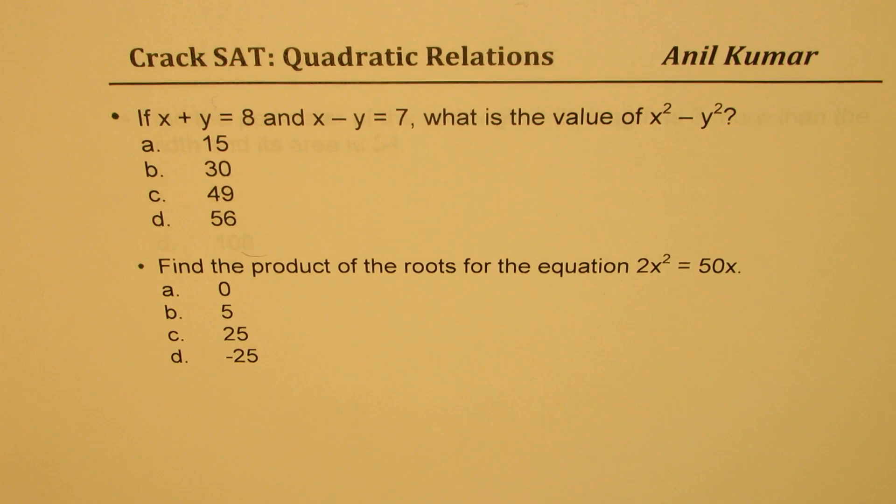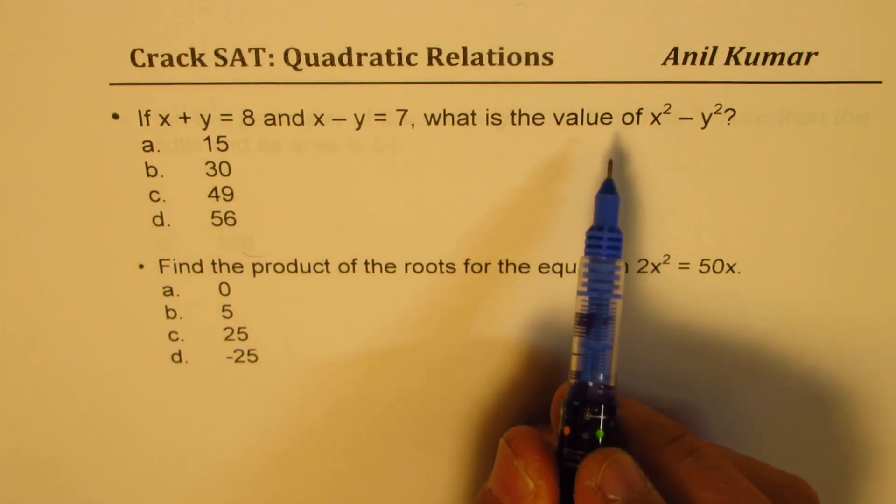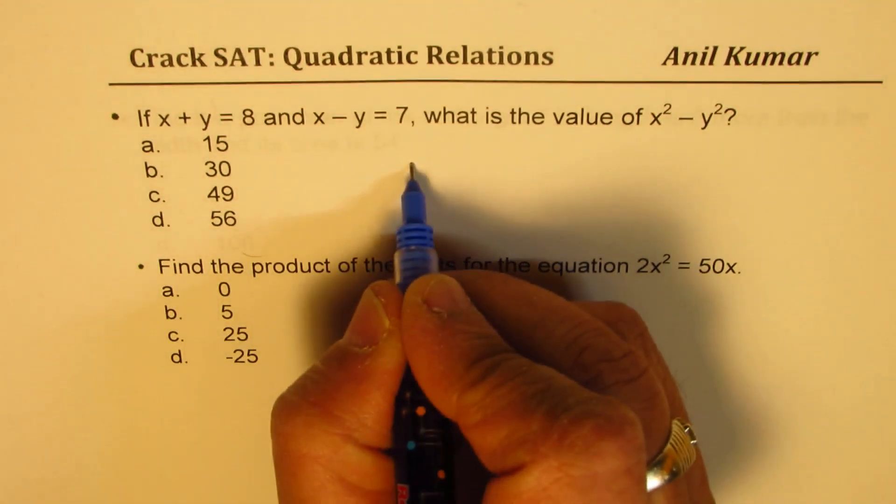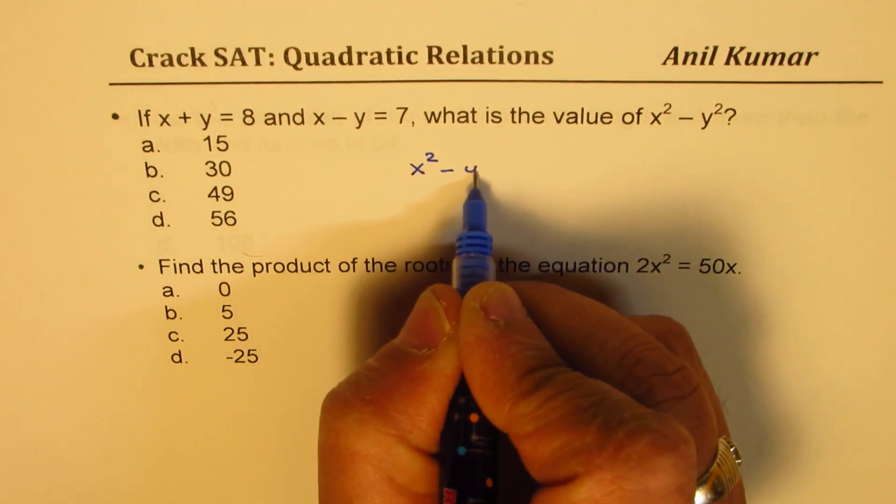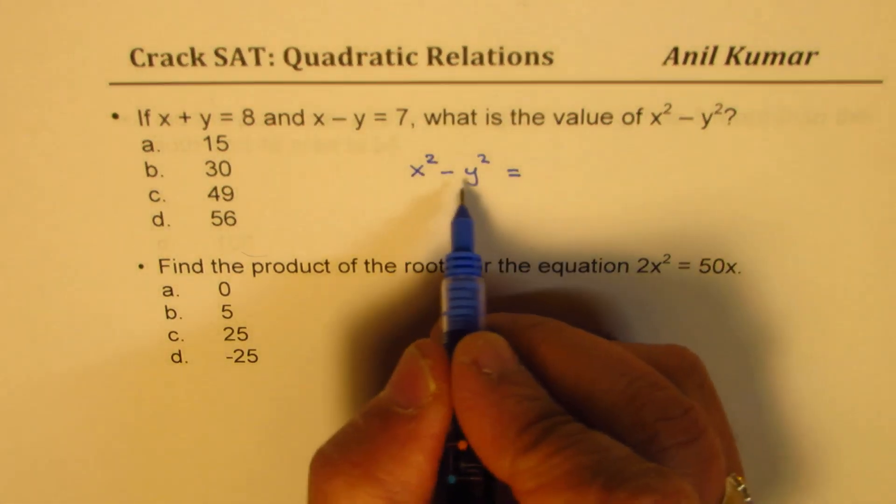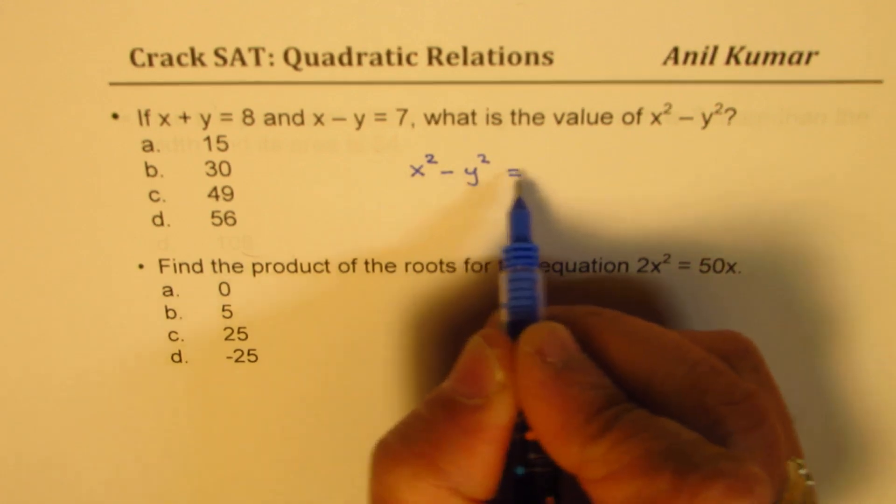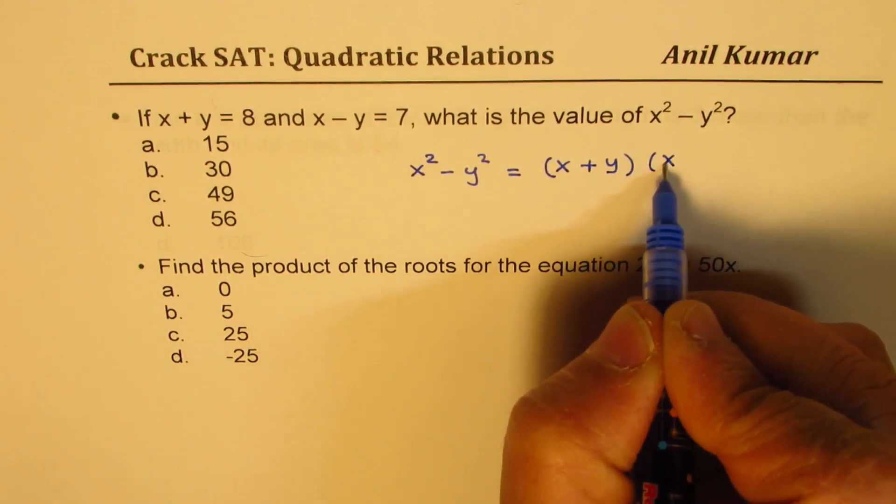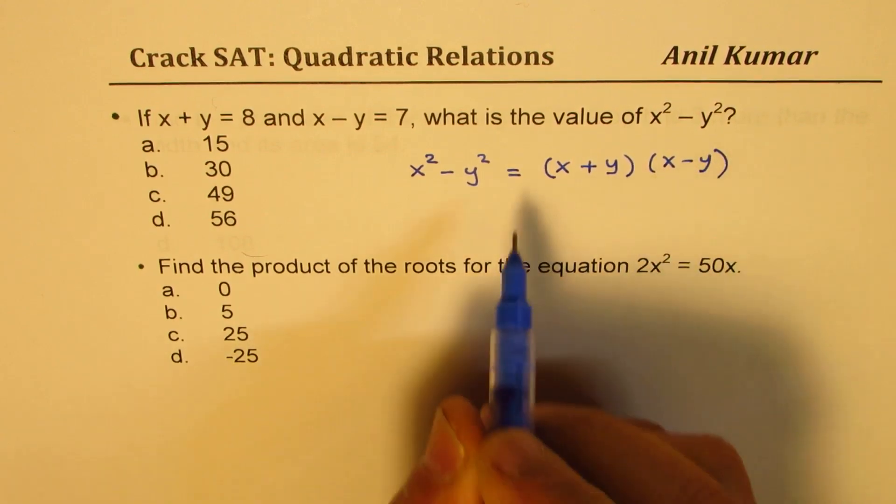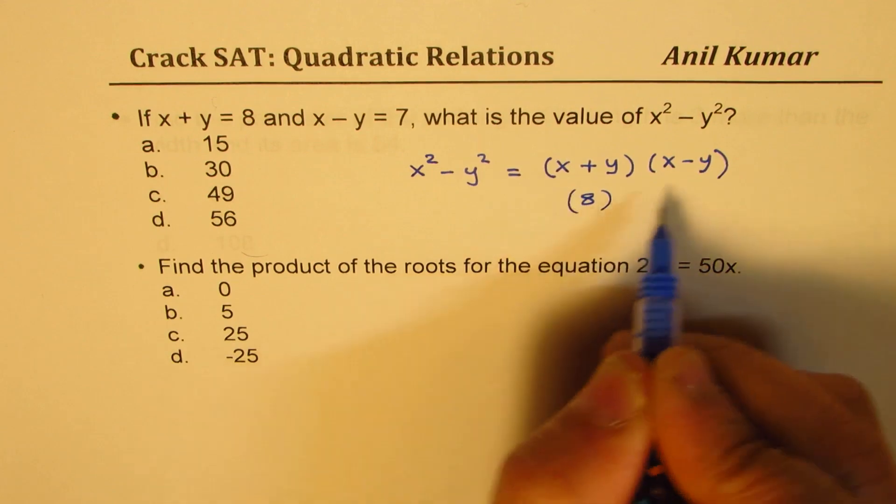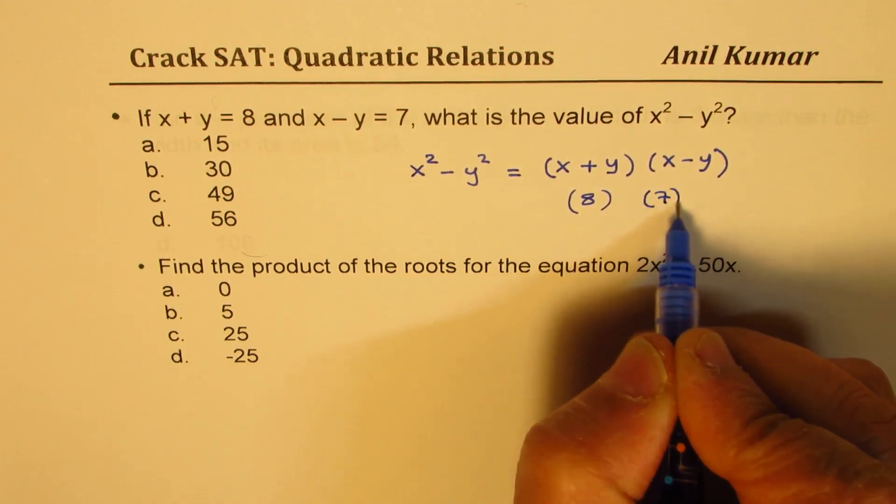Let us see how to solve it. Now we are given x plus y and x minus y. We need to find x squared minus y squared. So from the three basic formulas of factoring, one of the most important is difference of squares, which could be written as x plus y times x minus y. We are given both x plus y is 8 and x minus y is 7, and therefore it is the product of these two. So 8 times 7, 56 is your answer, option d.